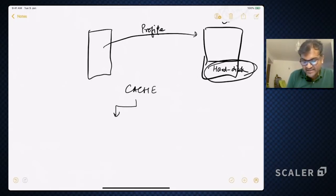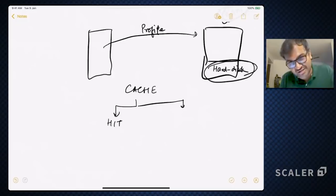And when I find data in my cache, it's called a hit. When I do not find the data because it is not present, therefore I'll have to go to the department store or go and read from the hard disk, that is called a miss. So whenever you find data in the cache, it's a hit. You don't find it, it's a miss. That is caching.